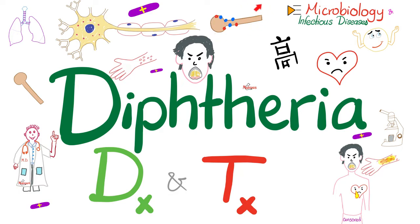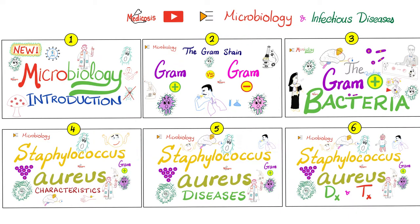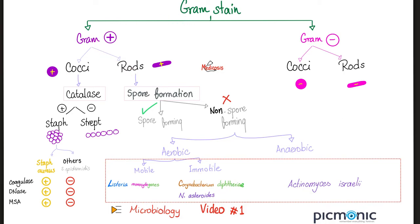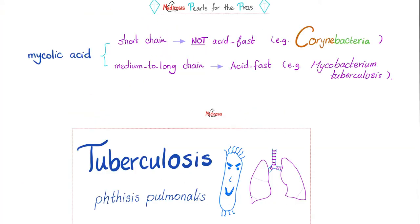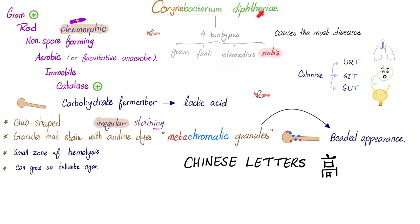The word Coryne means club-shaped. Diphtheria is a gram-positive rod. It is non-spore-forming, aerobic, yet immotile. Corynebacterium diphtheriae has mycolic acid; however, it is short-chain mycolic acid, and because it's short-chain, this bacteria is not acid-fast. It is pleomorphic, facultative anaerobic, immotile, catalase-positive, and a carbohydrate-fermenter, releasing lactic acid in the process.